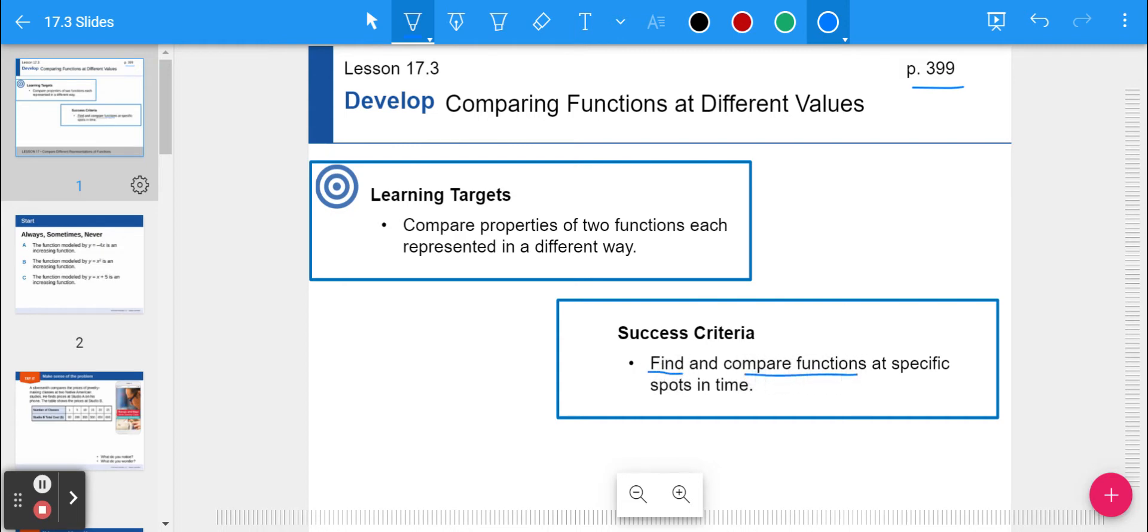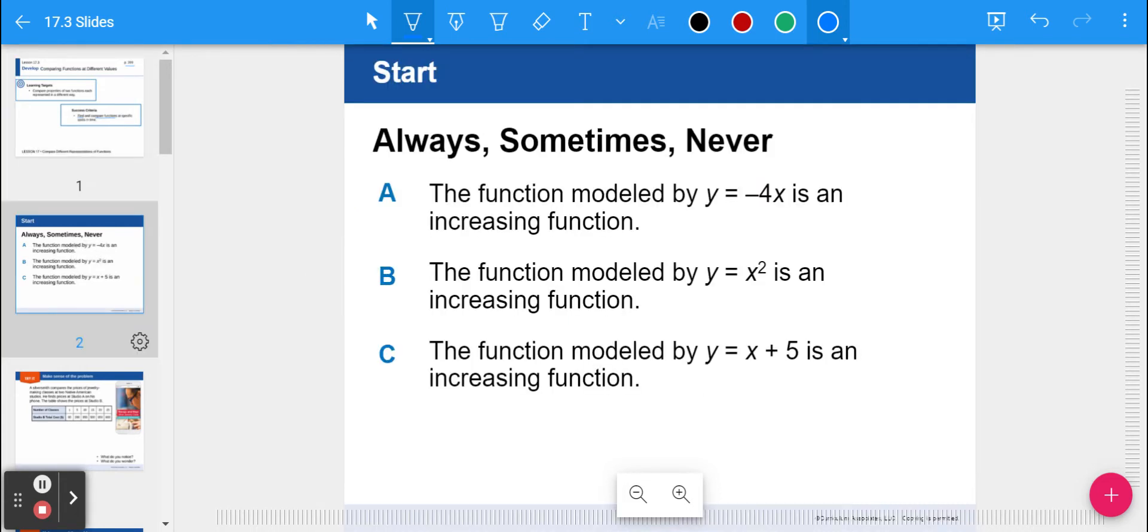As a quick recap, I've got three examples, always, sometimes, or never. What do you think? A, it says the function modeled by y equals negative 4x is an increasing function. What do you think? Well, that's never because it is a negative slope.